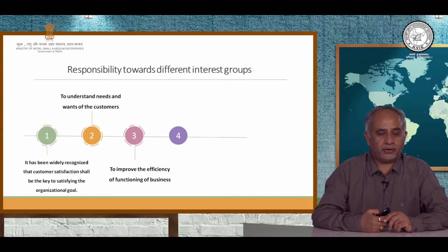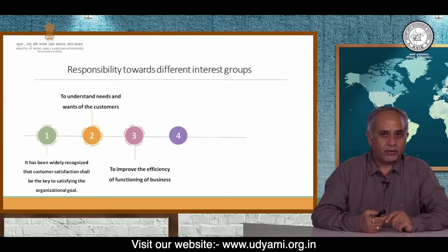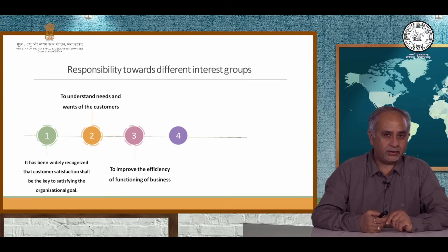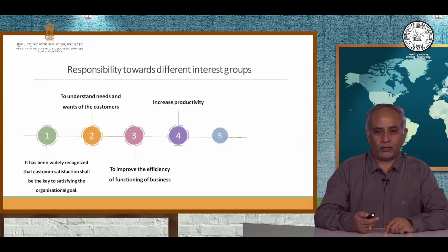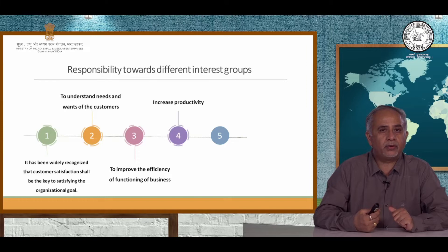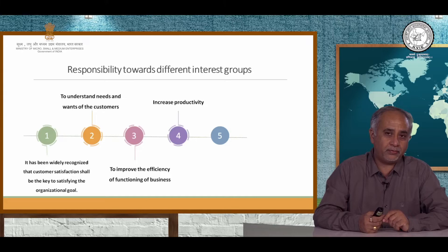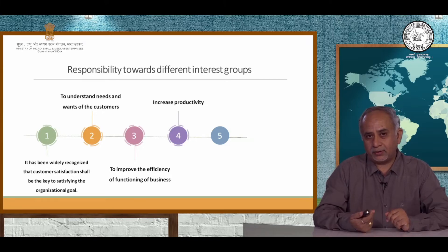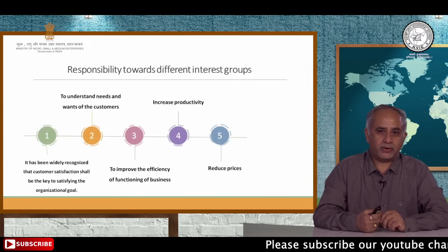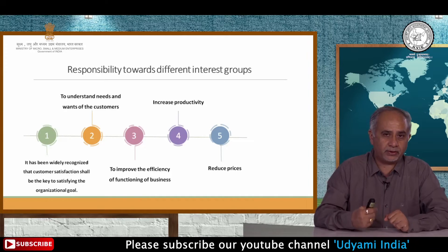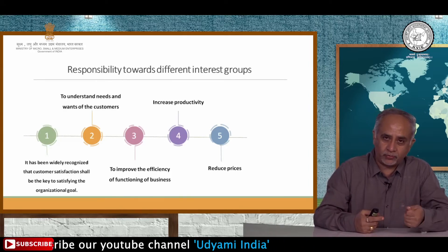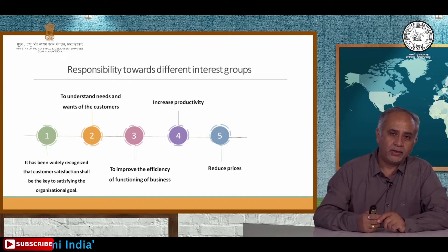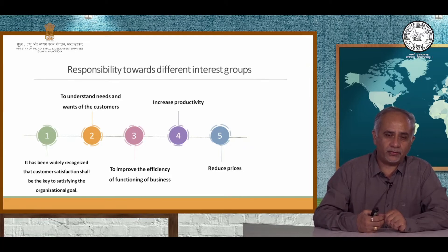Next is to improve the functioning of the business. Every business is focused on making processes smart and improving overall efficiency so that it contributes to the productivity of the organization. The next objective is to constantly improve productivity — if we are reaching target A in the first year, the next year's target has to be higher. Businesses also function in a manner that helps reduce the cost of manufacturing and services, which ultimately reduces the price burden on the customer.